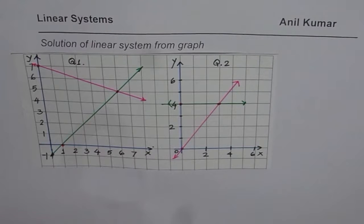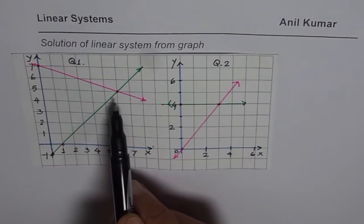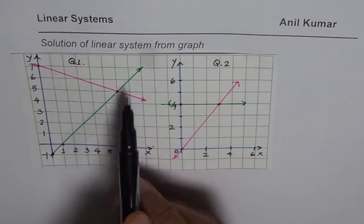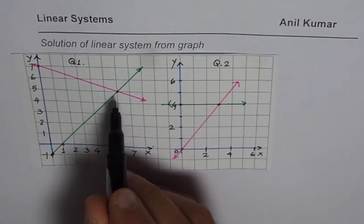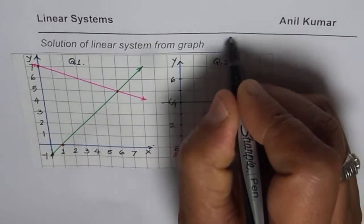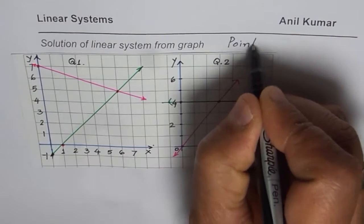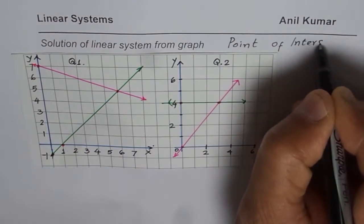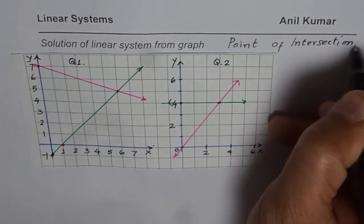You can pause the video, answer the question and then look into my suggestion. The solution of the very first one is point of intersection. Solution of a linear system from graph is easy to find. What you have to look for is point of intersection.